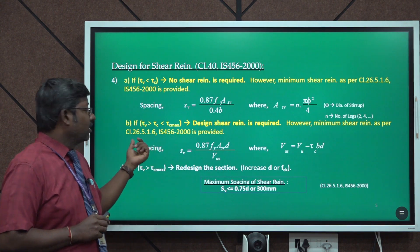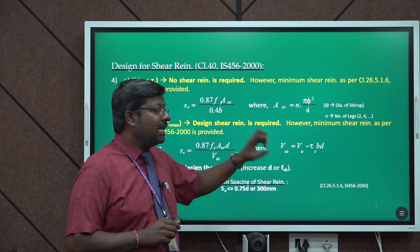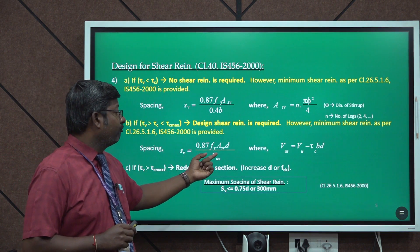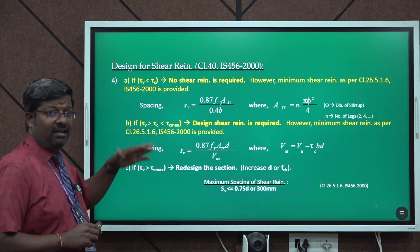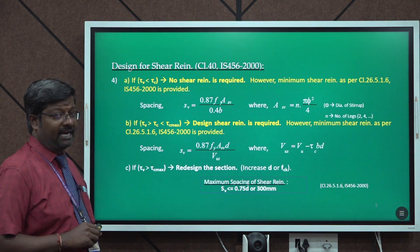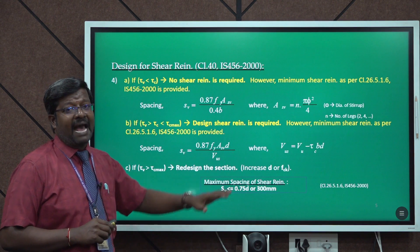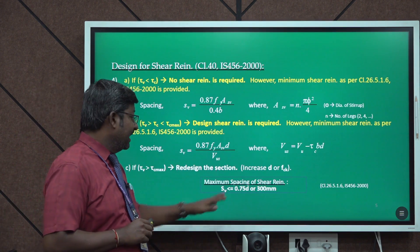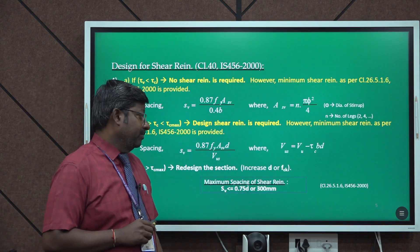Case 2: if τV is greater than τc but less than τc_max, design shear reinforcement is required. The spacing formula per Clause 26.5.1.6 is SV = 0.87 × fy × ASV × D / VUS, where VUS = VU − (τc × B × D). Case 3: if τV exceeds τc_max, the section must be redesigned. The maximum spacing of shear reinforcement must not exceed 0.75D or 300 mm, whichever is lesser.